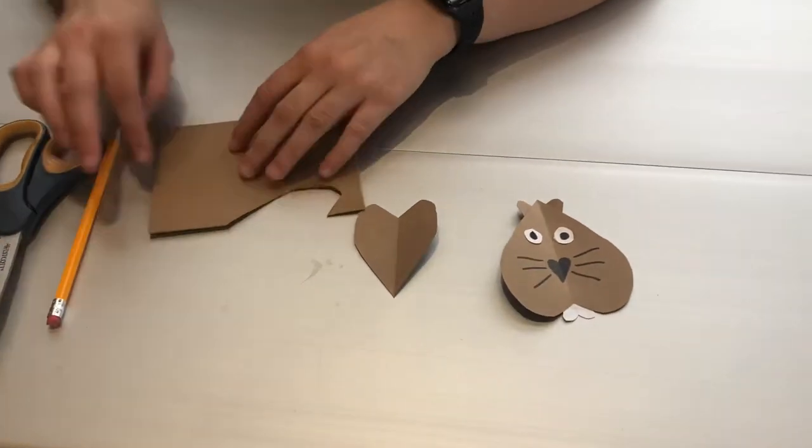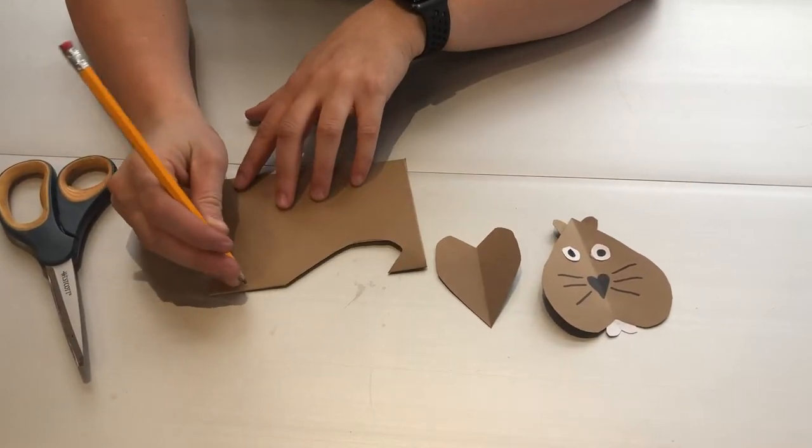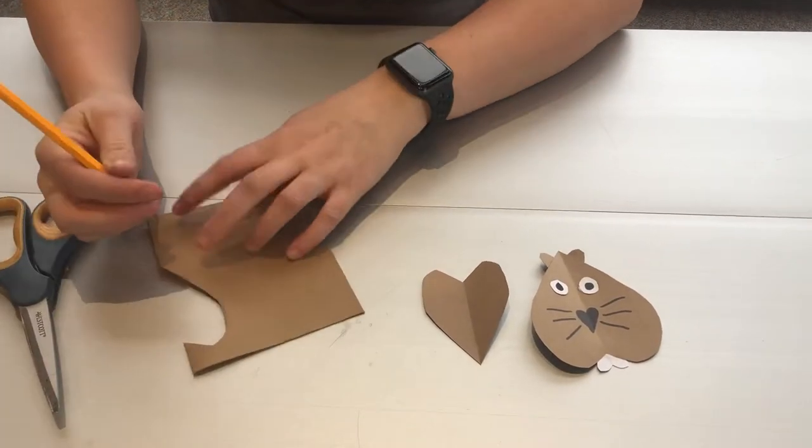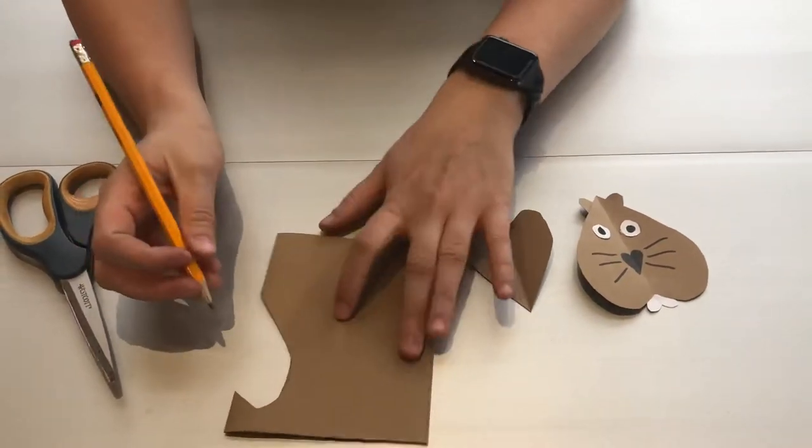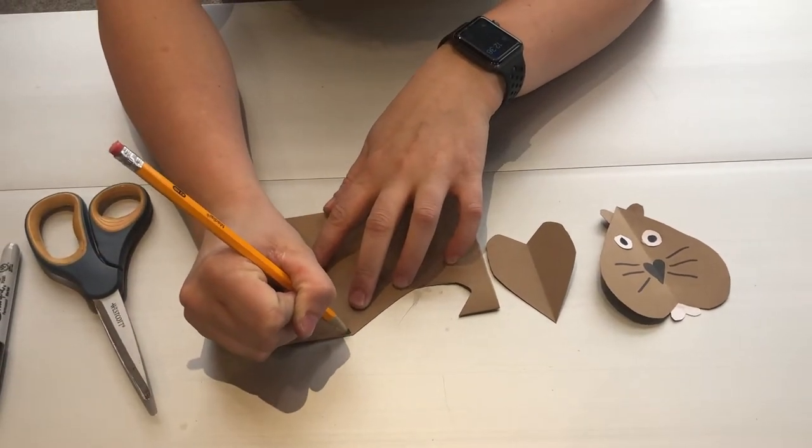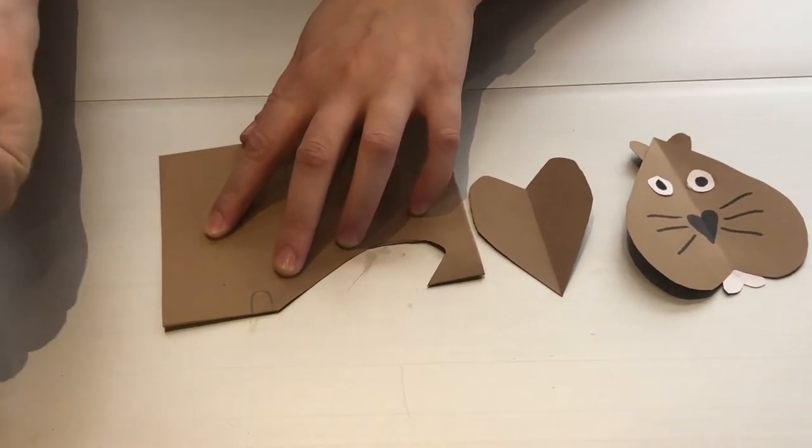You can either do the ears on the seam side or the other end. I'm just going to do it right here. And to draw those, you just make like a straight line, and then a curved line, and then a straight line again. And then you'll cut that out.